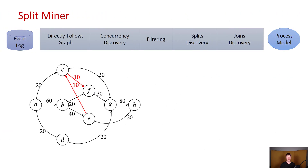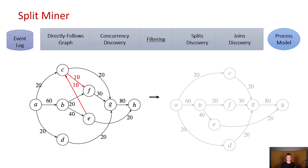Then the algorithm will continue with filtering, and here it's going to look at the least frequent arcs or directly follows relations. Those are going to be removed from the graph in order to make the resulting process model a bit more readable. This gives us a simpler directly follows graph, which will be the basis for the next step.